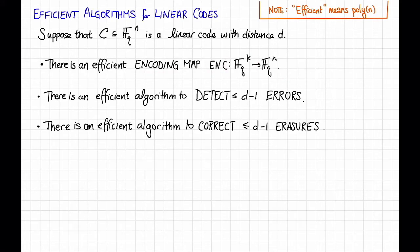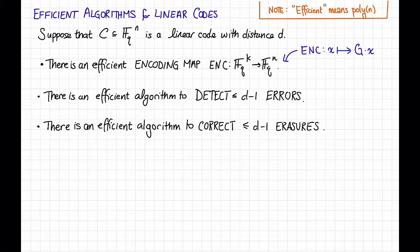Pause the video and try to figure out what this encoding map is. Hopefully you've realized that this encoding map is just multiplication by a generator matrix G. So enc maps some message x to the codeword G times x. Matrix multiplication we can do in polynomial time, so that's an efficient algorithm.